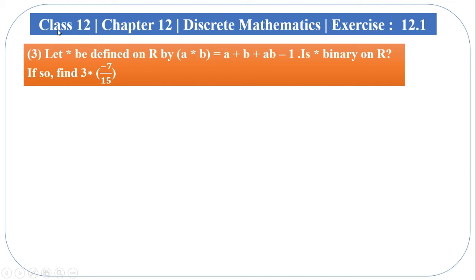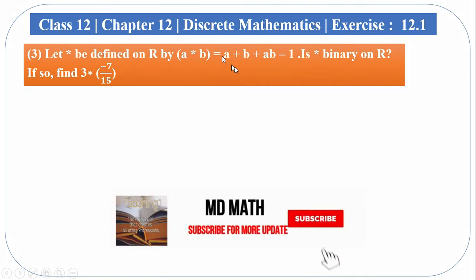As-salamu alaykum students. Class 12, chapter 12, exercise 12.1, question number 3. Let star be defined on capital R by a star b equal to a plus b plus a b minus 1. Is star a binary operation on R? If so, find 3 star minus 7 divided by 15. So our condition is a star b equal to a plus b plus a b minus 1.